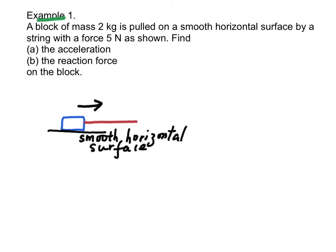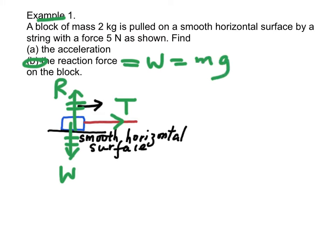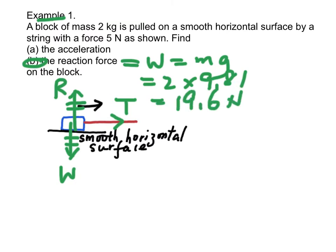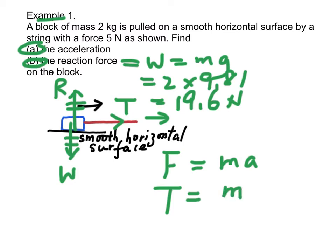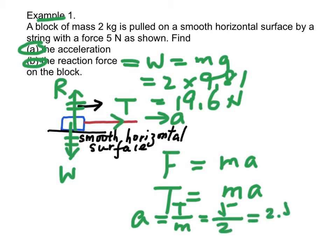Example 1. The force diagram shows tension T, weight W, and reaction force R. Since R equals W, the reaction force equals W equals Mg equals 2 times 9.81 equals 19.6 N. For part A, by Newton's second law F equals MA, the net force is tension only. Therefore T equals MA, and acceleration A equals T over M equals 5 over 2 equals 2.5 m/s².